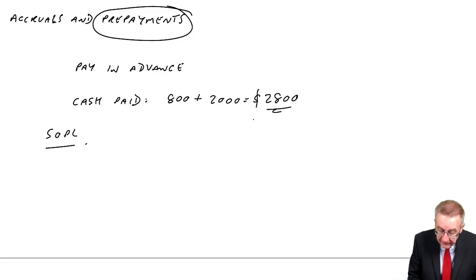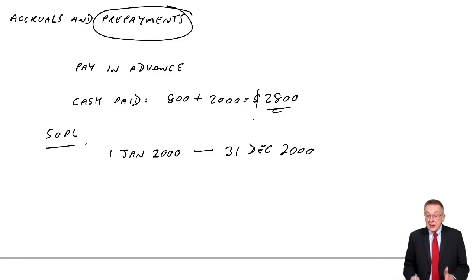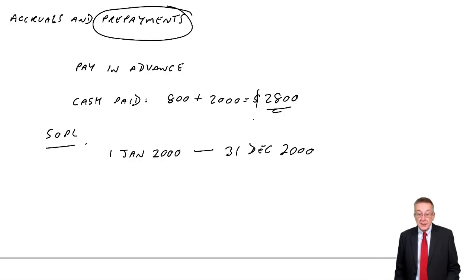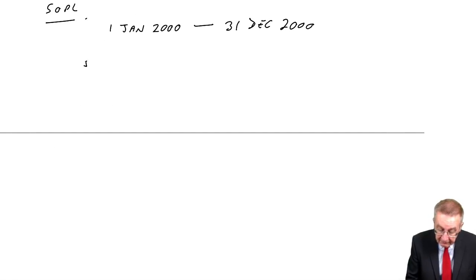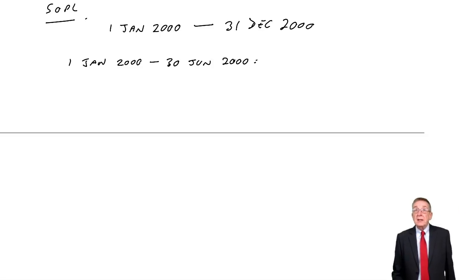For the statement of profit and loss, we need to know the expense for her year, which is 1st of January 2000 through to 31st December 2000. We need to know how much the insurance is costing for that period — not how much cash has been paid, but how much it is actually costing her to insure for those 12 months, January through to December 2000. We know how much the first six months cost: from January 2000 through to the 30th of June 2000 — that was the first bill she paid, so those six months are costing her $800.